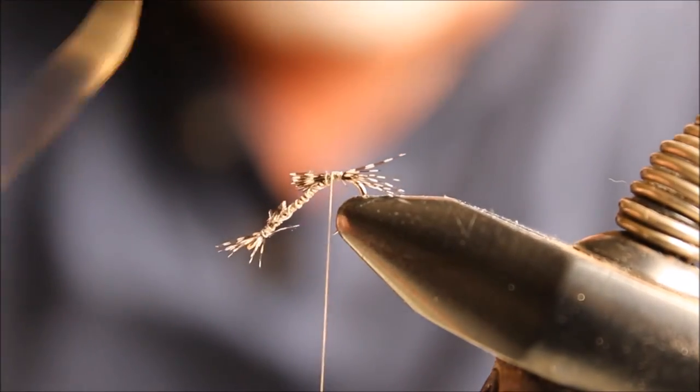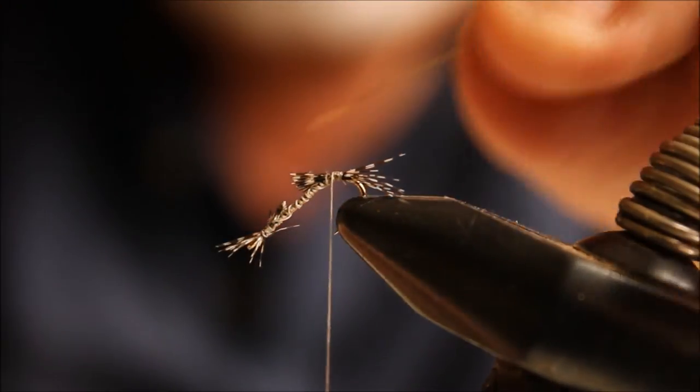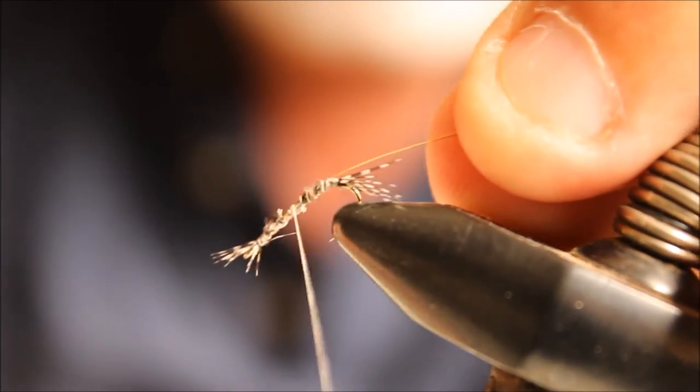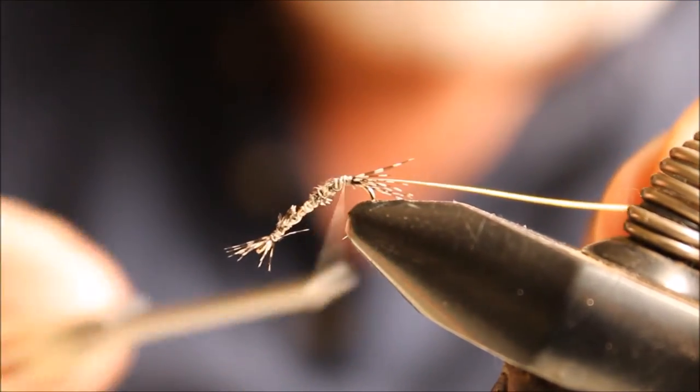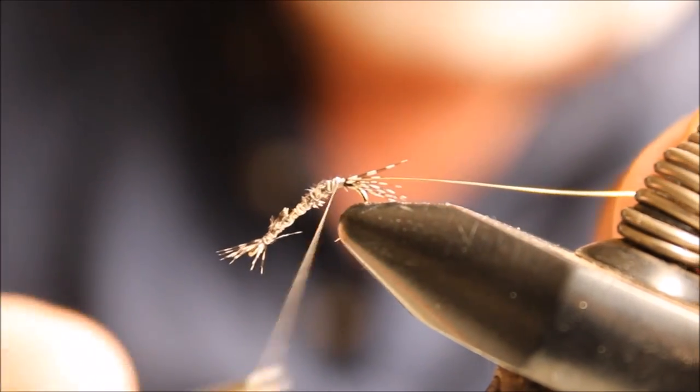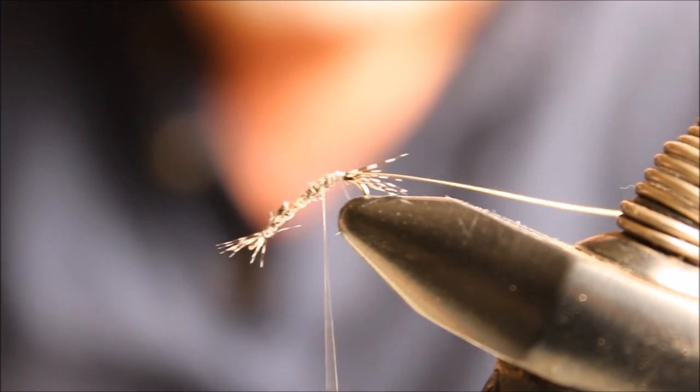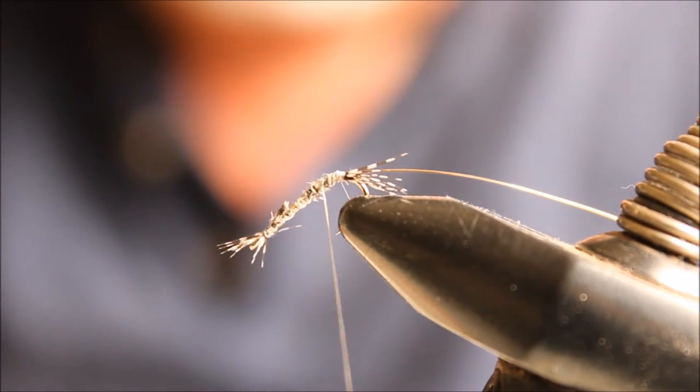Next, time to tie in my wire, and this will serve as my ribbing. On smaller sizes—I tie this, this is a 16—I tie from a 14 down to an 18. On the smaller sizes, I just use a piece of thread that I double over.